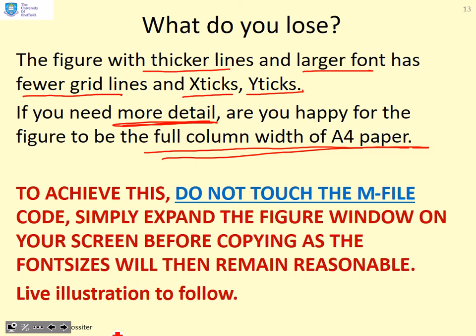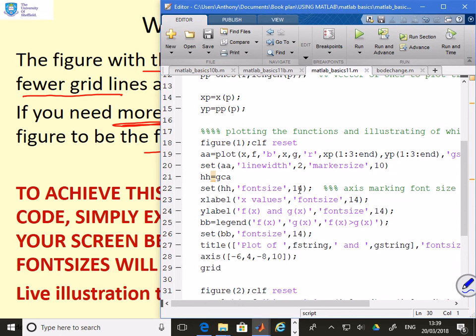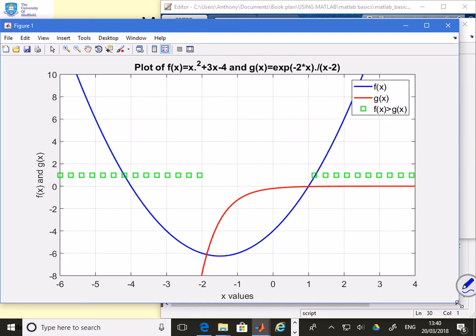So here's my recommendation to achieve this. You'll see the key point here. Do not touch your M file. So your M file is set to have certain font sizes, certain line widths and so on. Simply expand the figure window on your screen before copying, as then the font sizes will stay as you want when you copy them into Word. So let's go back and demonstrate this. So here I've got my MATLAB Basics 11. I'll leave them on 14. It doesn't matter. So let's run that file. So here's the window I like because I've got the font sizes I want. So all I'm going to do is take this window and make it bigger. You see I've made it bigger. And I've said, OK, now you'll see I've got more X ticks. As I make it bigger, MATLAB automatically gives me more X ticks, more Y ticks.